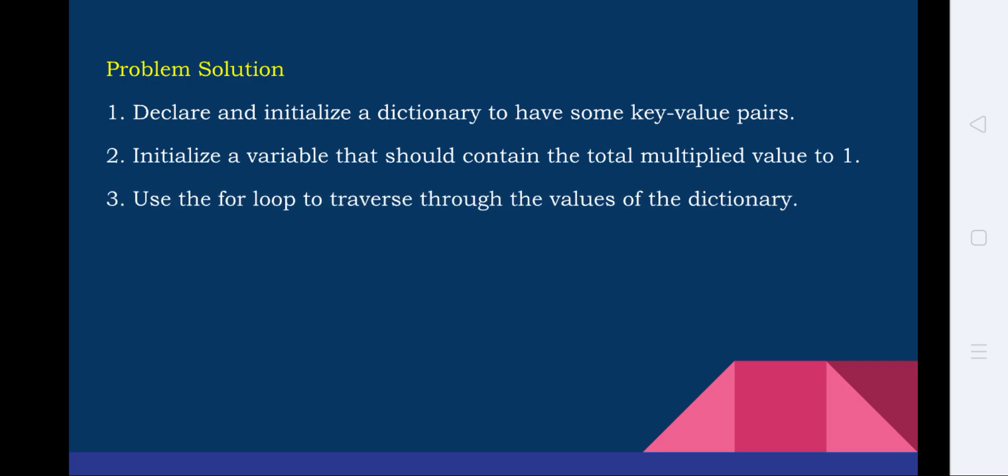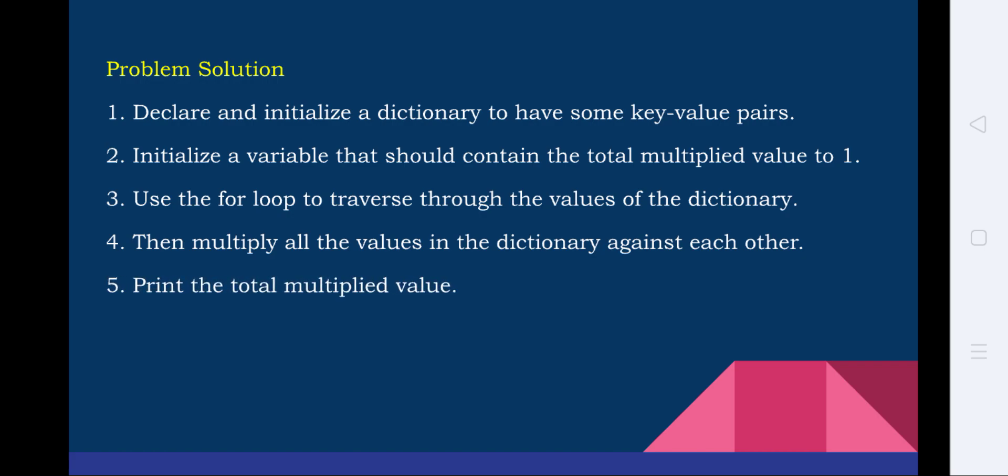Use the for loop to traverse through the values of the dictionary. As we know that dictionary has collection of data, we need some loop and we are using the for loop to traverse. Traverse means visit all the values of the dictionary. Then multiply all the values in the dictionary against each other. That is, we are going to keep on multiplying one by one till all the values are exhausted. And then we are going to display the multiplied value on the screen.